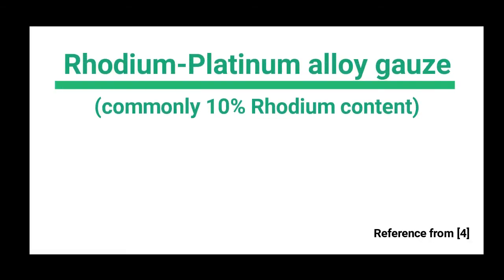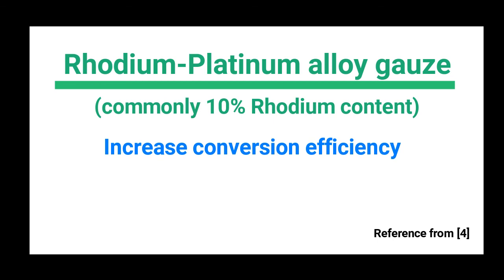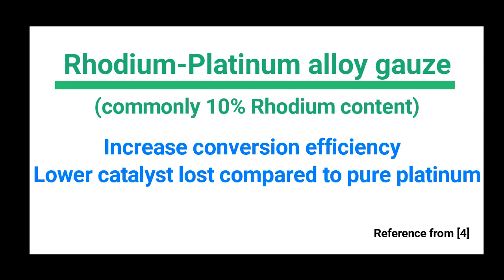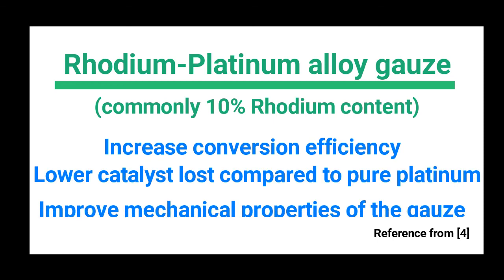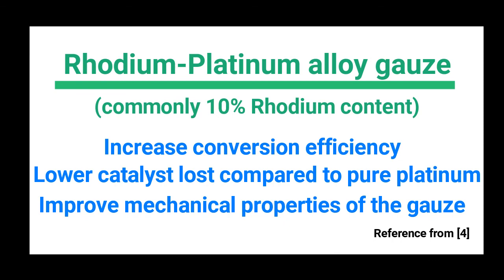Let's look at the modification to the process. By using an improved catalyst — a rhodium-platinum alloy gauze — we can increase conversion efficiency, achieve lower catalyst loss compared to pure platinum, and improve the mechanical properties of the gauze.